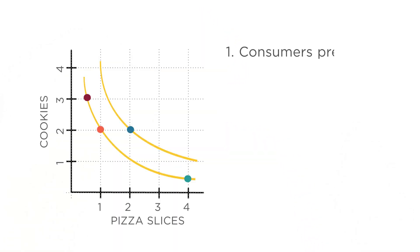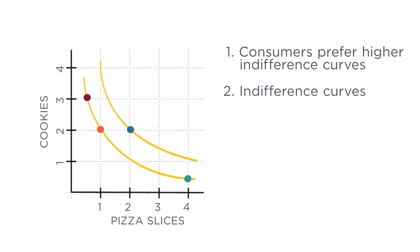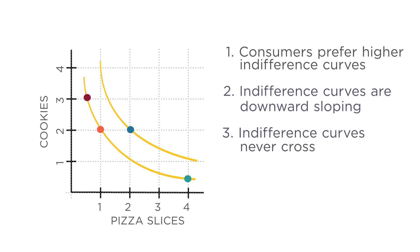That leads us to the first of four important properties of indifference curves. First, consumers prefer higher indifference curves — more is better, and as you move away from the origin in this graph, you're getting more of both goods. Second, indifference curves are downward sloping: to get more pizza, you have to give up some cookies. Third, indifference curves never cross — each indifference curve contains all the bundles that give you a certain amount of satisfaction, so no two indifference curves can share a point. Fourth, there is one indifference curve through each possible bundle.